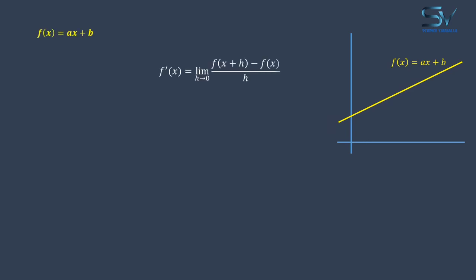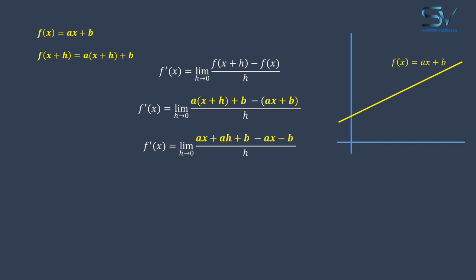This is the definition of derivative. We have f of x, but not the f of x plus h. So, to find that, simply replace x with x plus h. Put them in the derivative definition now, solve this. Ax and minus ax will cancel out, plus b and minus b will also cancel out. We get the limit h approaches 0 of a. Because a is a constant, solving the limit h approaches 0 will result in a. So finally, f prime equals a. This means that the slope of straight line is same everywhere or constant everywhere.